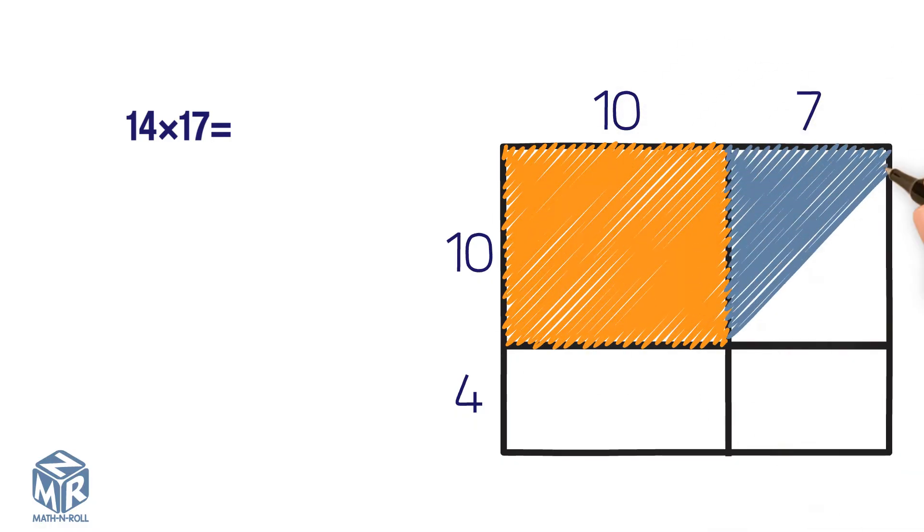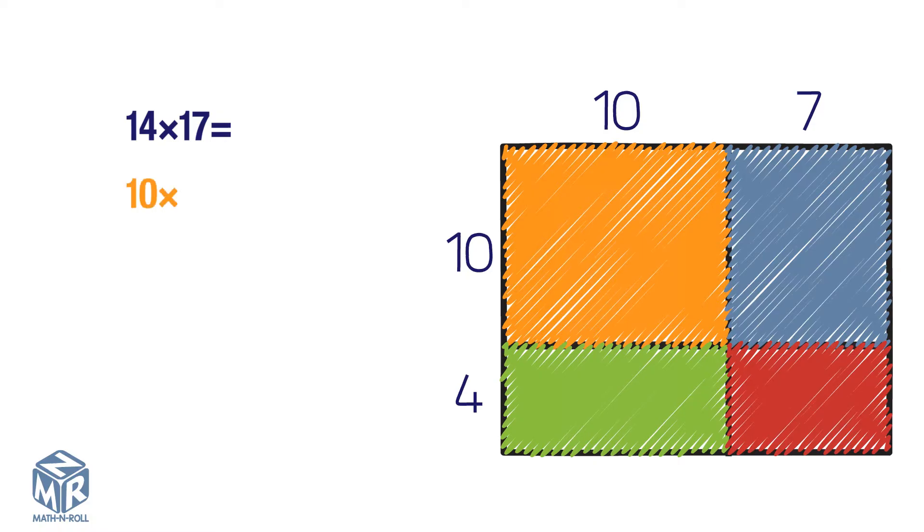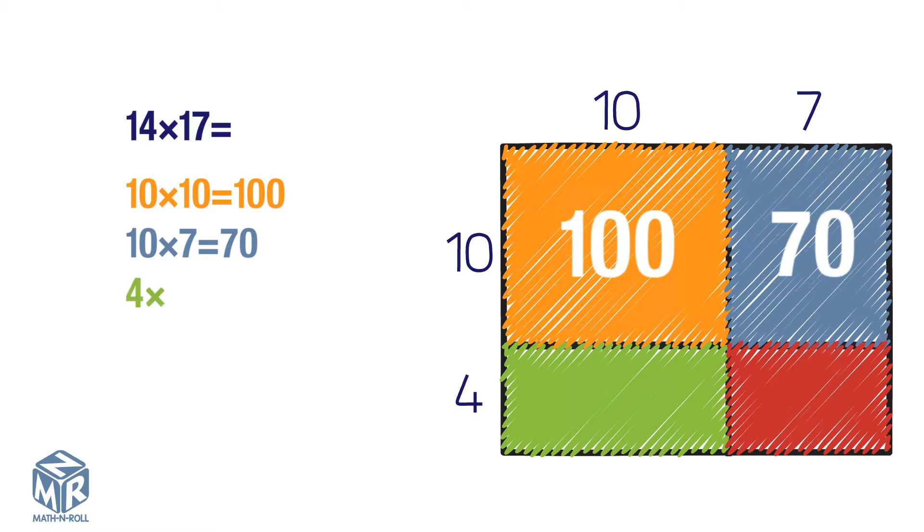Shade each smaller rectangle. Find the products of each smaller rectangle. 10 times 10 equals 100. 10 times 7 is 70. 4 times 10 is 40. And 4 times 7 is 28.